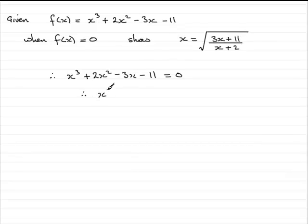We'd have x cubed plus 2x squared equals 3x plus 11. Now the question is, where did this x plus 2 come from? And also, where did the square root come from?